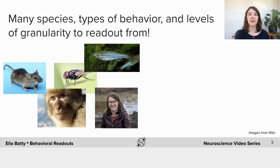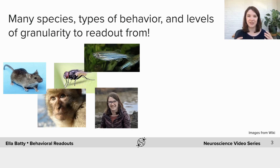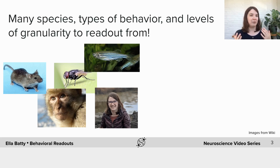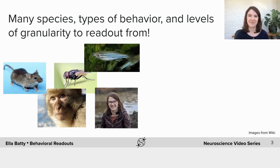So we use a lot of different model organisms in neuroscience. We use mice, rats, flies, monkeys, fish, humans, among others. And that means there's a lot of different types of behaviours to study. Reading out swimming from fish is very different from reading out flying from flies and so on.